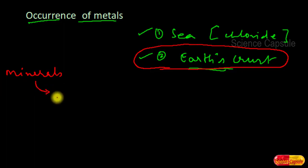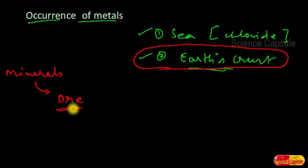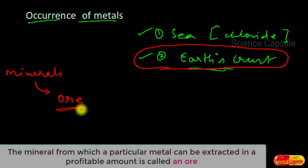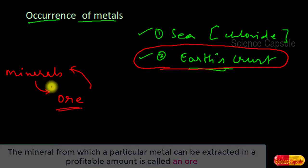The elements or compounds that exist naturally in the earth's crust are what we call minerals. The percentage of elements or compounds in minerals is relatively less, so extraction cannot be done profitably from all minerals. In some places the elements are available in plenty, and we can extract metals profitably — we call those minerals ores. So all ores can be considered minerals, but all minerals cannot be ores.